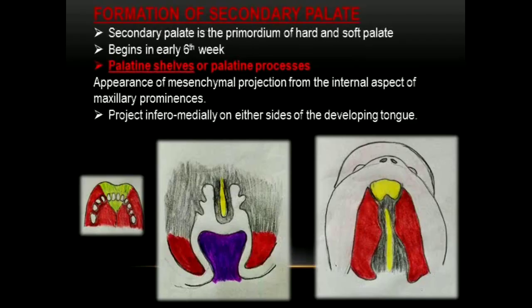Now let us see the formation of the secondary palate — that is the region behind the incisive foramen. The secondary palate consists of the primordium of the hard palate and the soft palate. Formation of secondary palate begins at the 6th week of intrauterine life. From the internal aspect of the maxillary processes, there will be mesenchymal projections called palatine shelves.